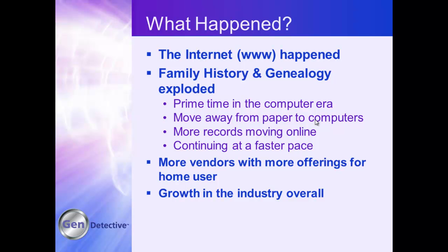What happened? The internet happened. Family history and genealogy exploded — it moved from a hobby where we went to archives and historical societies, national, state, local, and courthouses. Now we started to find our information online. It transformed from a niche hobby where you purchased software for $25, $45, $79, beyond photocopies — your big expense — and you still hopped in your car, drove to the library, did your microfilm, printed out your pieces of paper, and took them home. We weren't scanning yet.